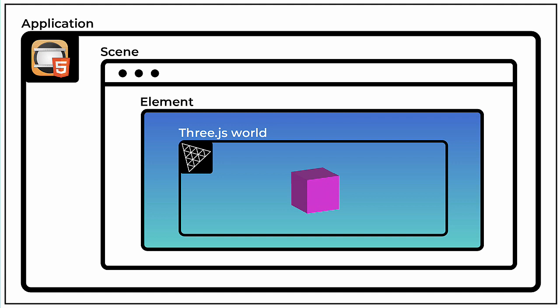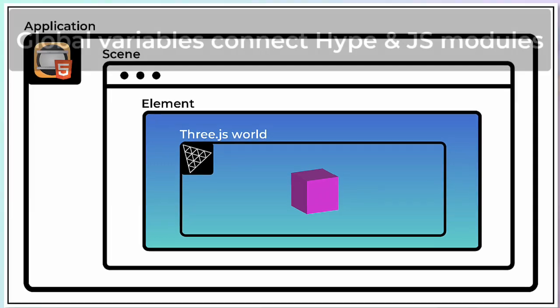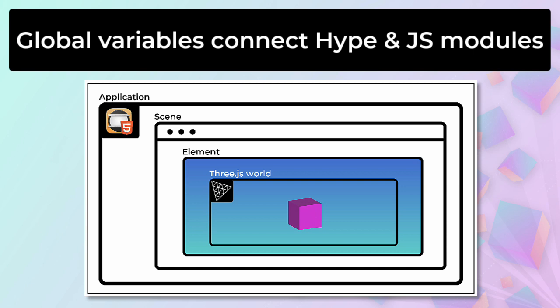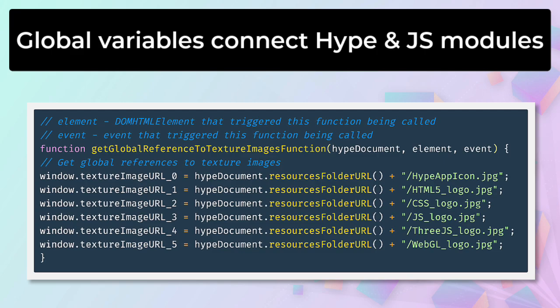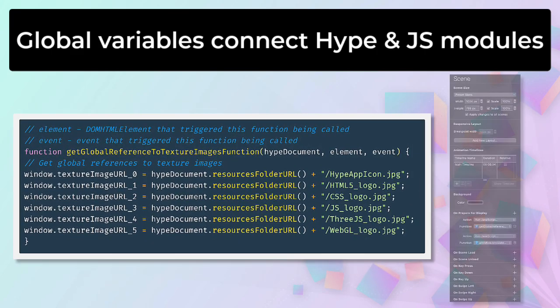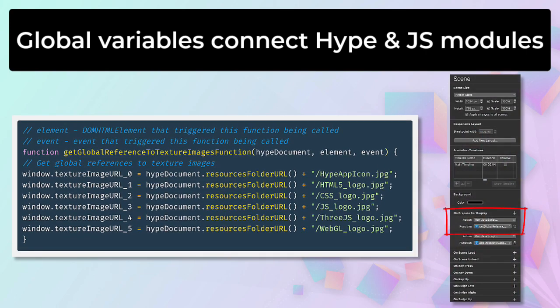Although our 3JS worlds are running within Hype containers, there is no easy way to communicate between these components. This is a problem because we want the images for our textures to reside in Hype's resources panel. To overcome this problem, I've created a set of global variables attached to the window object that can be used to communicate between Hype and the JavaScript modules generating our three-dimensional worlds. These variables can only be constructed once the URL of the resources folder has been established. Consequently, this function must run after Hype has finished loading but before our 3D worlds are built. This is one reason for having a brief preload scene. The code for this task is contained in a function called getGlobalReferenceToTextureImages, and we load this function just prior to the splash screen being displayed.